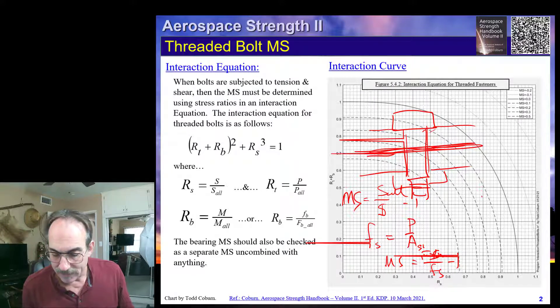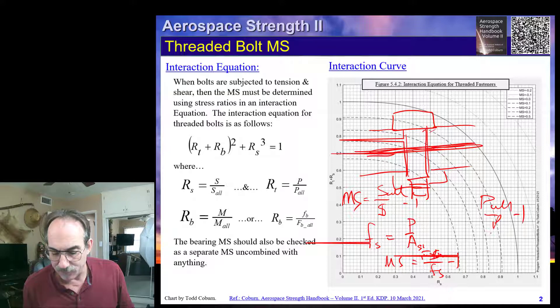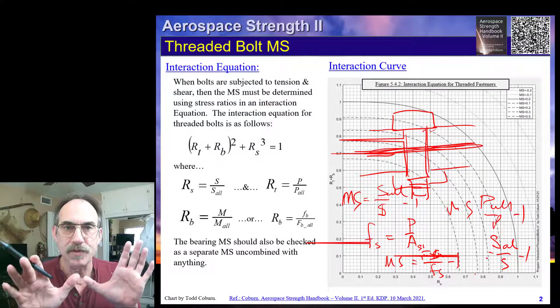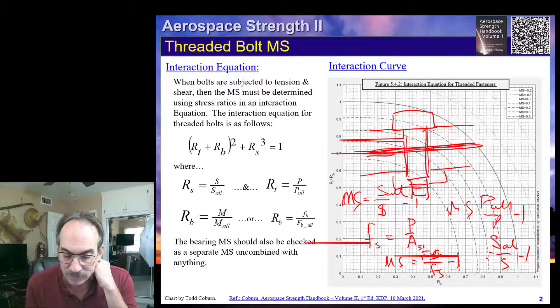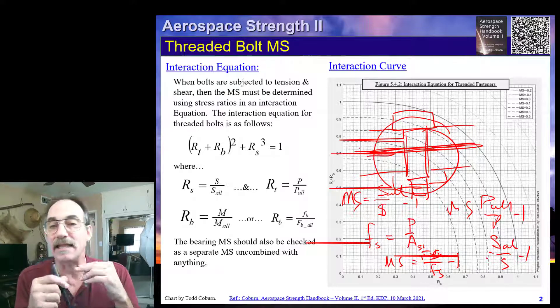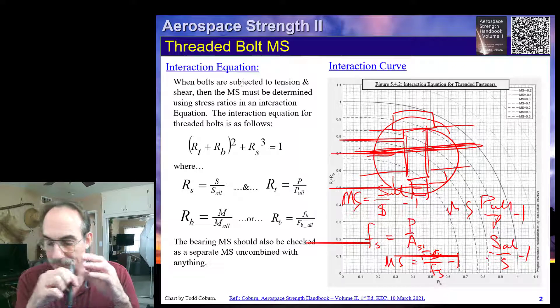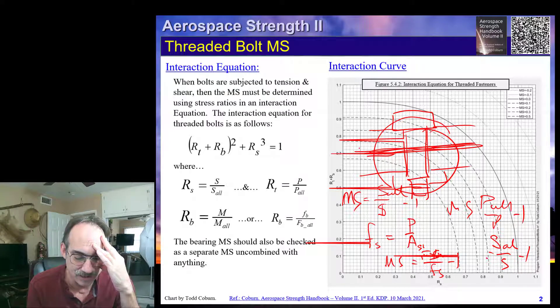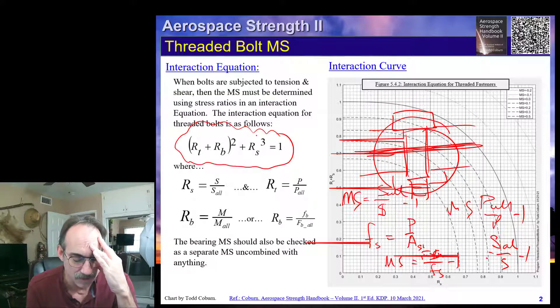So if you have tension alone, it's just P allowable over P minus one. If you have shear alone, then it's going to be S allowable over S minus one. But if you have both together, if this bolt is in tension and shear, then you need to write the interaction equation. Because actually when you have shear and tension, the bolt responds based on this interaction equation.